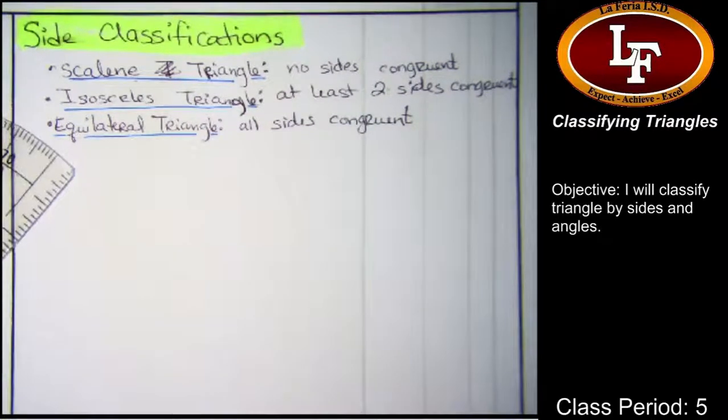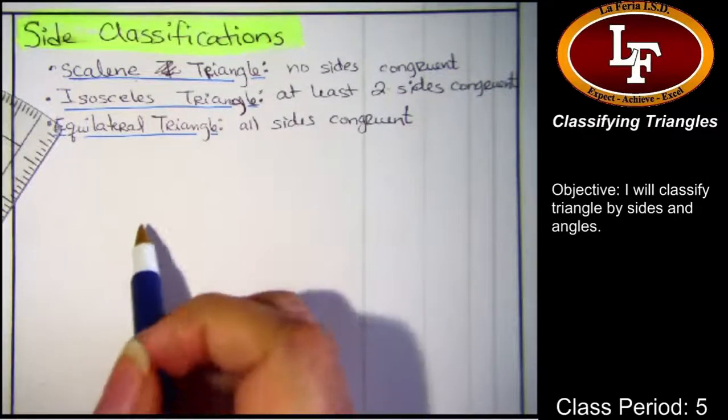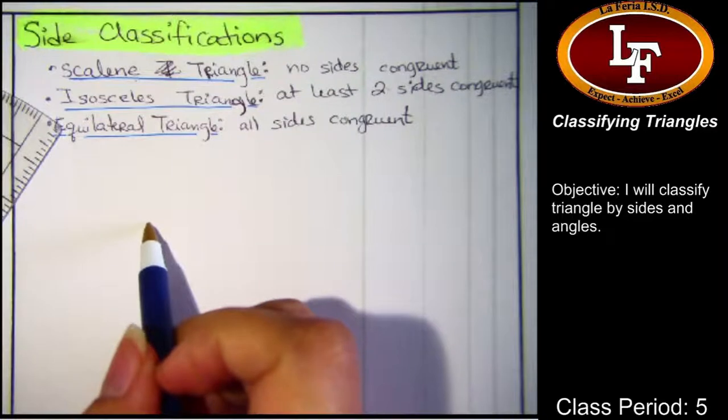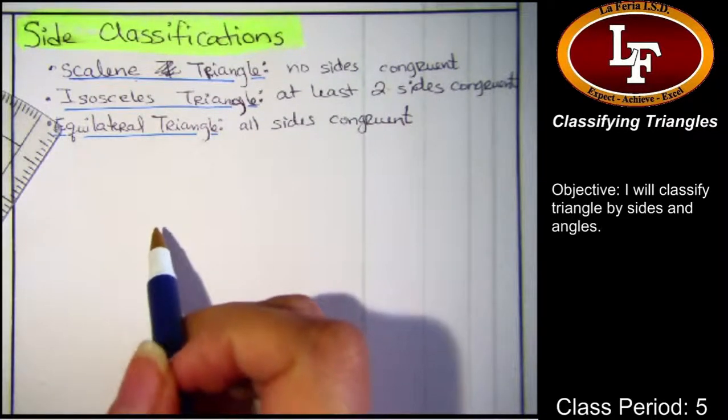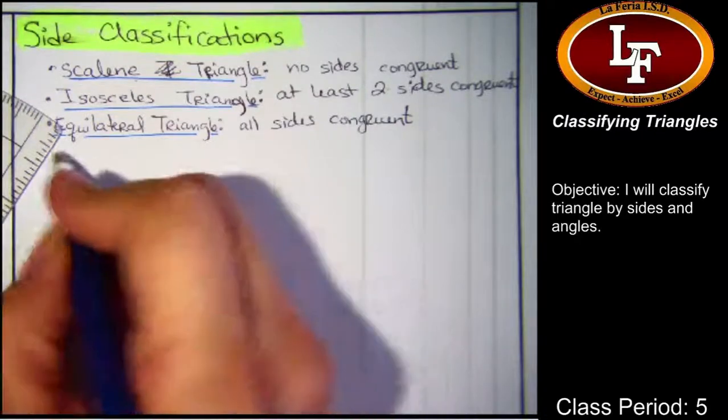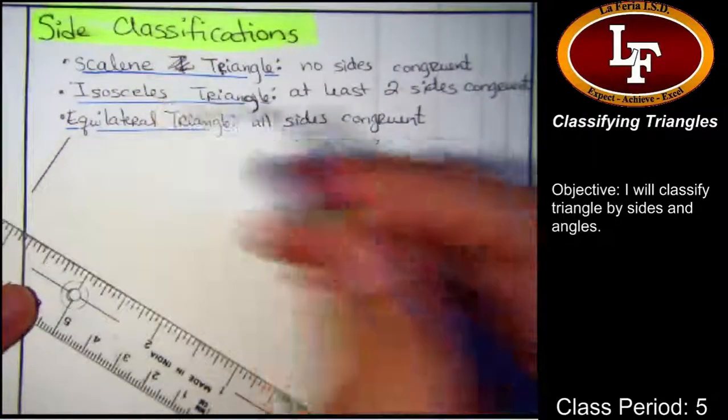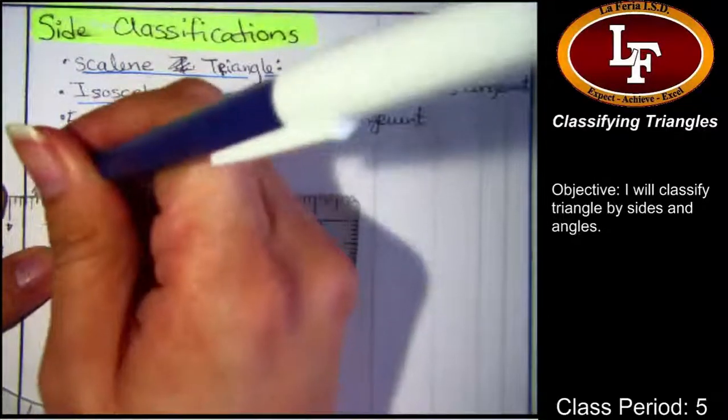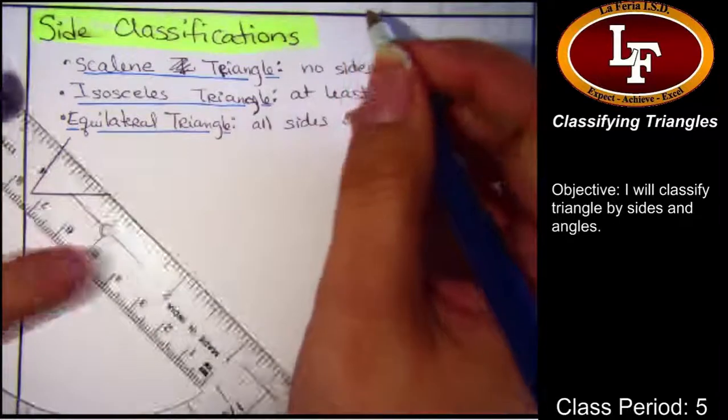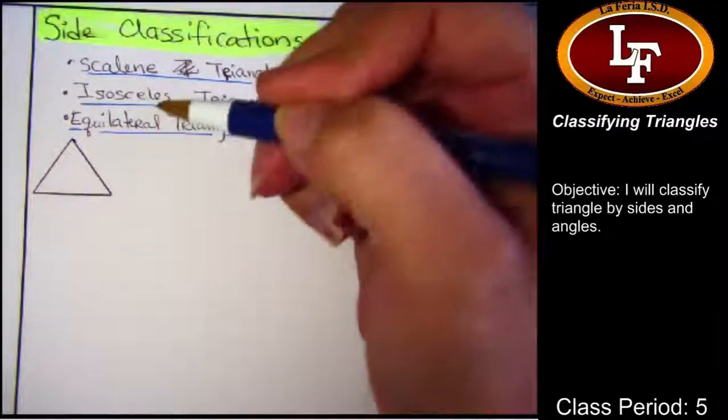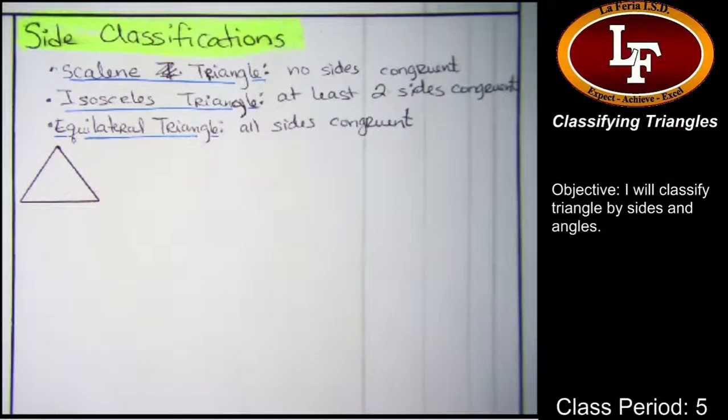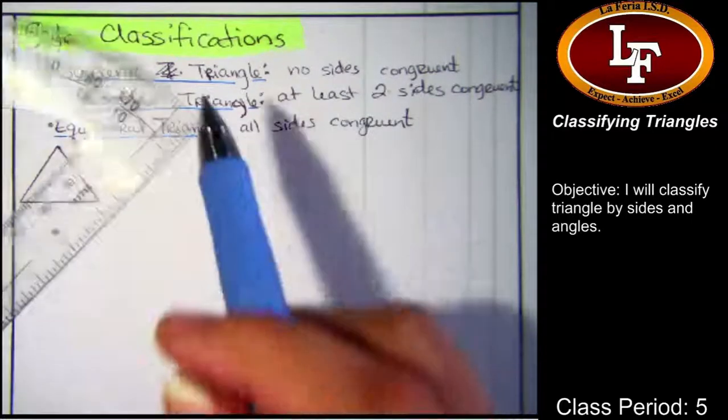So grab your protractor or ruler at this time and we're going to draw a random triangle here. And then we're going to measure the sides and try to figure out which one we came up with. So I'm going to put a side here. I'm going to put a side here. And I'm going to put a side here. Remember, you will need your rulers.